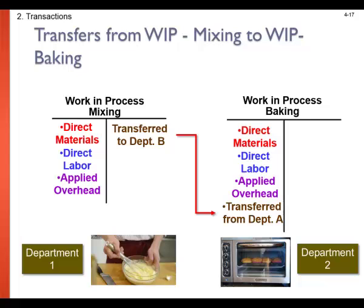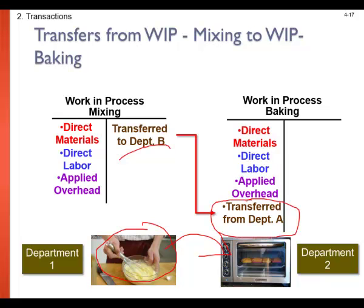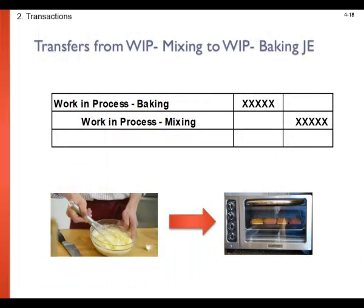Once processing has been completed in a department, the units are transferred to the next department for further processing. When all the dough is mixed in the mixing department, we transfer that dough and all its costs to the baking department. We credit or reduce the work in process for mixing, and debit the work in process for baking. This shows how costs move from one work in process account to the next — we are simply transferring costs from mixing to baking.